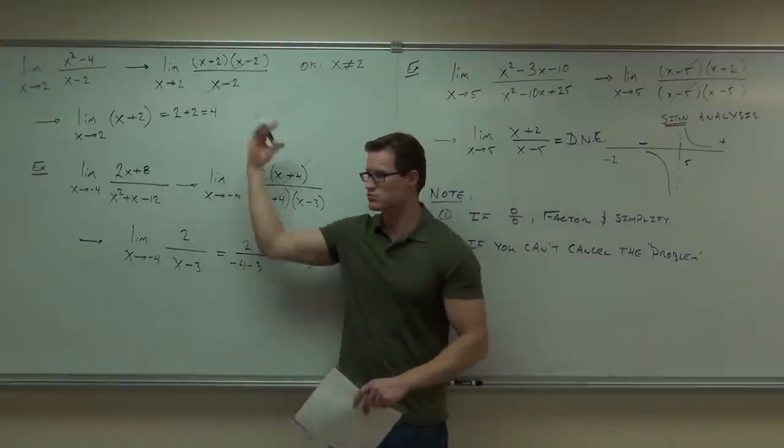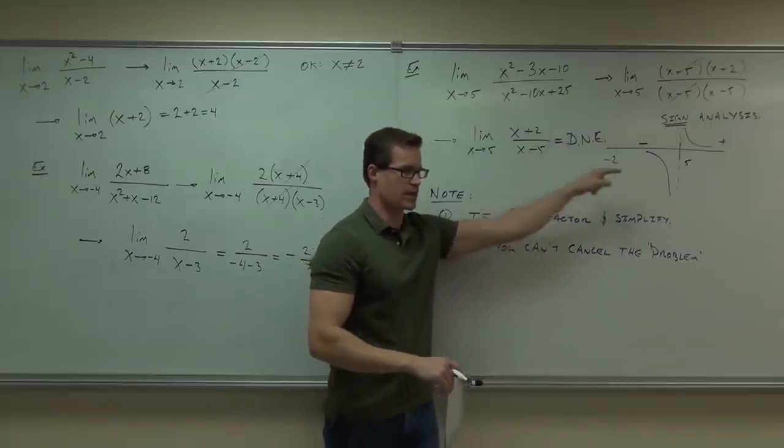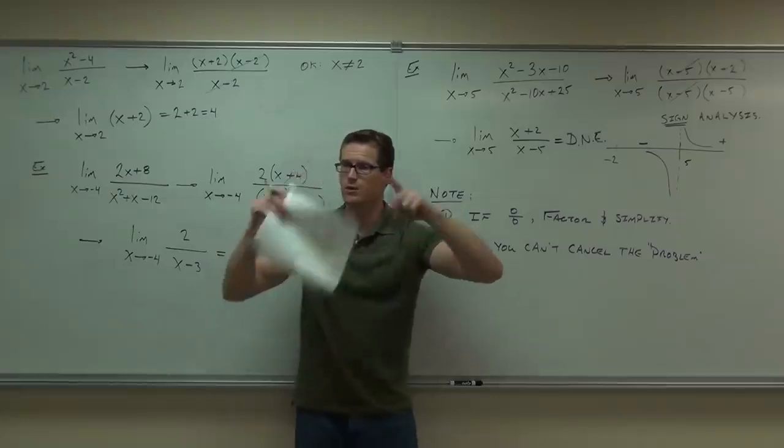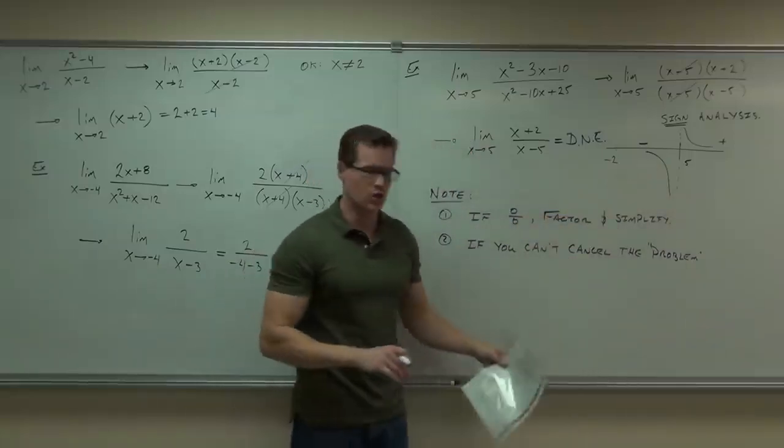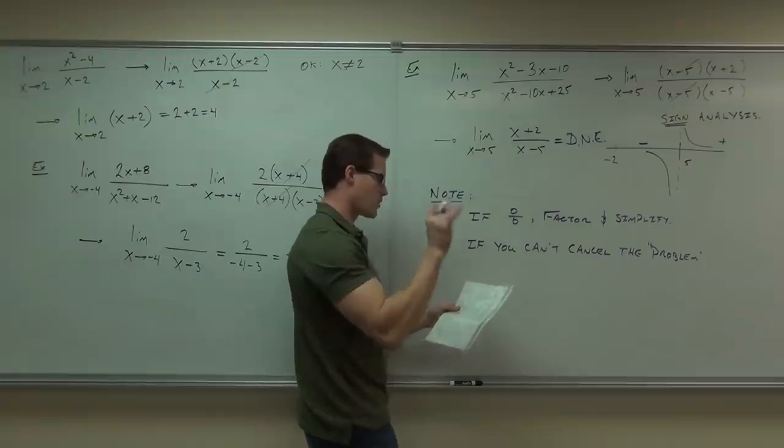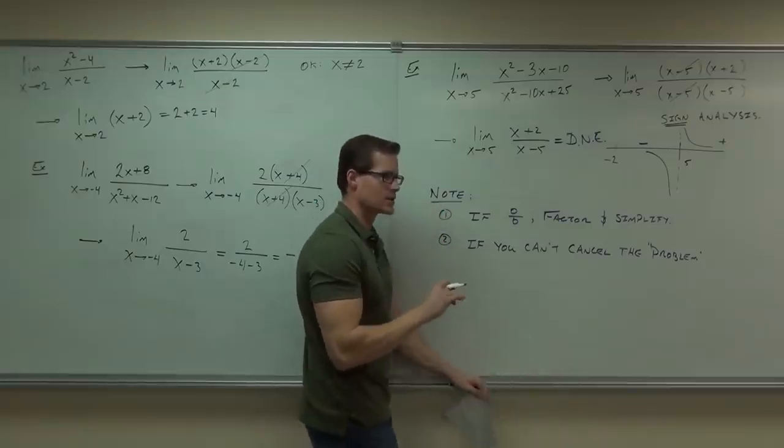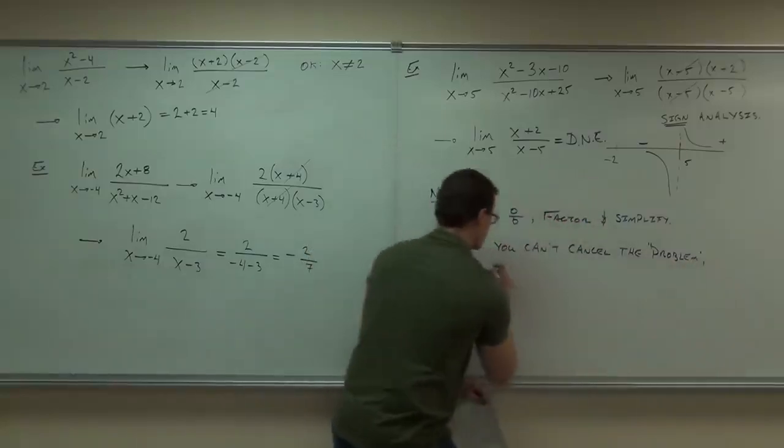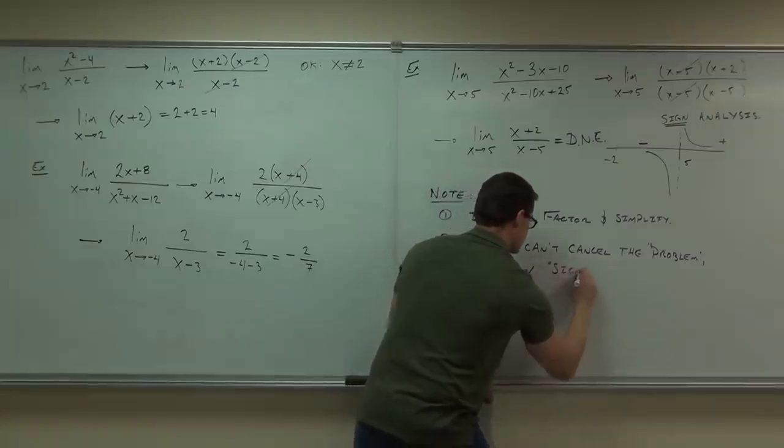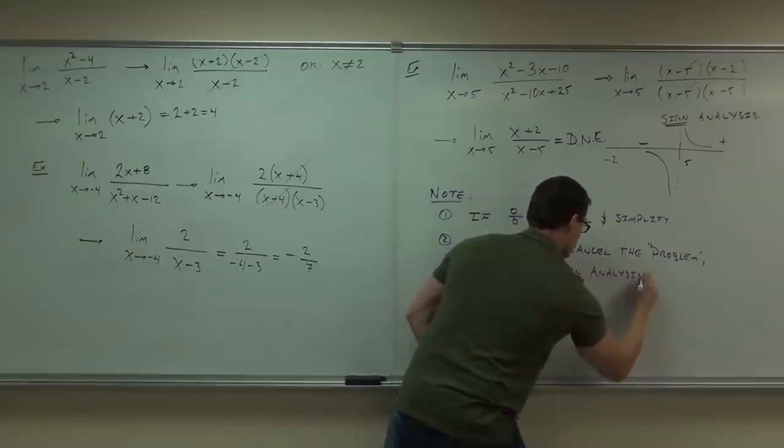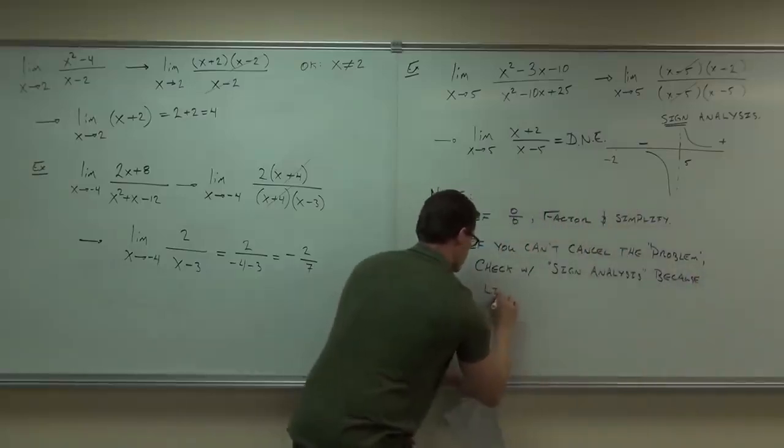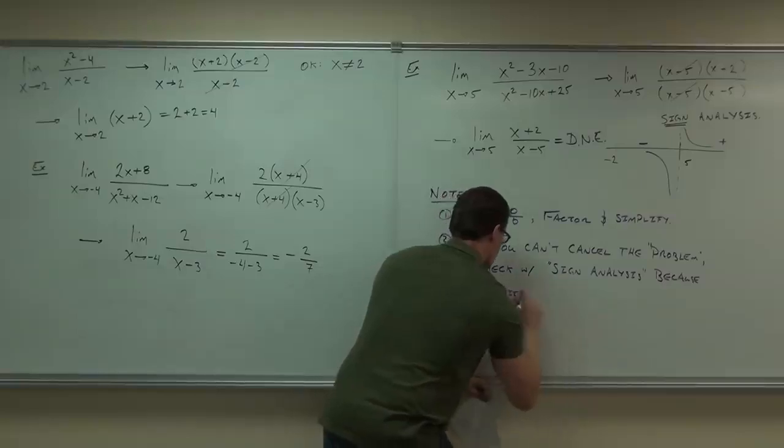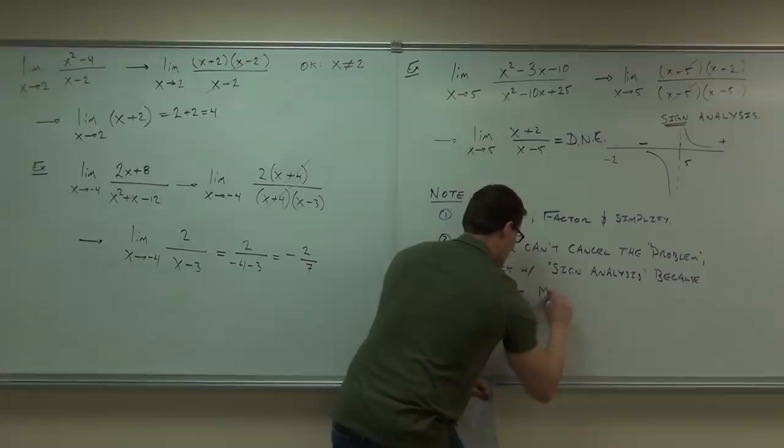So two situations: holes, cancel them, great, done. Not holes, those are asymptotes. Sign analysis will show you what that does around the asymptote. If they go into the same thing, it exists, positive infinity or negative infinity. If it's not, then it doesn't exist, and that's the only way you can show that for us. So if you cannot cancel the problem on the denominator, check with sign analysis, because the limit might not exist.